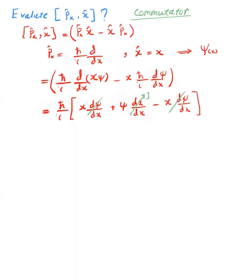So we're left with h bar over i multiplied by psi. If we drop psi, then we end up with only h bar over i, and this is the answer of the commutator. The commutator [Px, x] equals h bar over i.